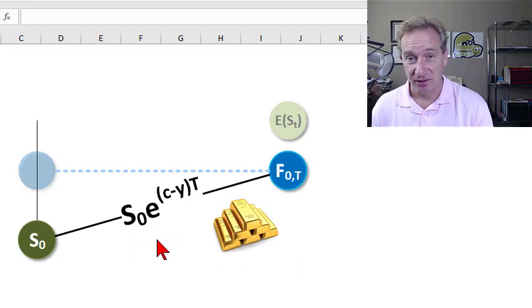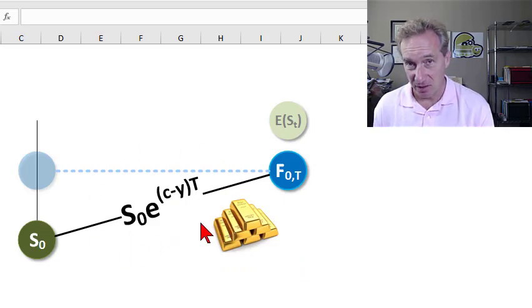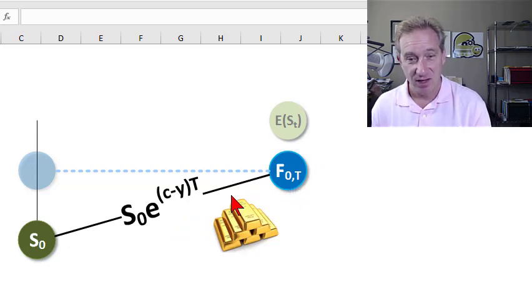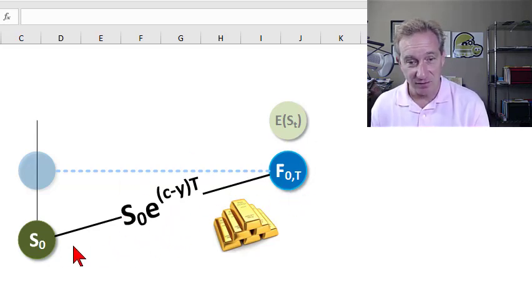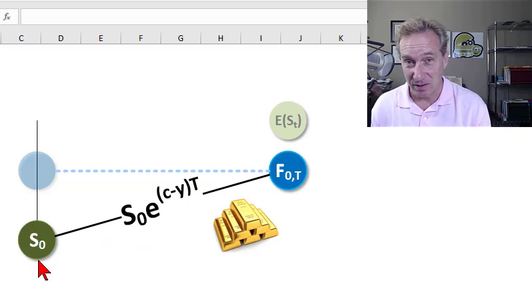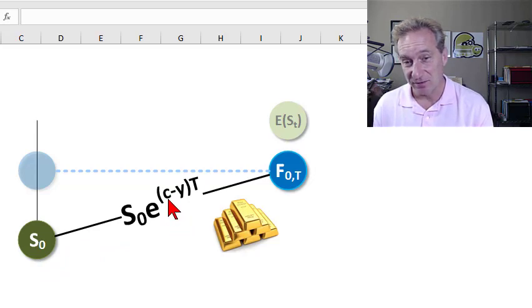My previous videos illustrated the cost of carry model, which determines for us the theoretical price of the commodity futures contract. And recall that cost of carry model tells us to expect a theoretical price that is a function of today's spot price of the commodity grown at what I called the net cost of carry or the cost of carry minus any convenience.